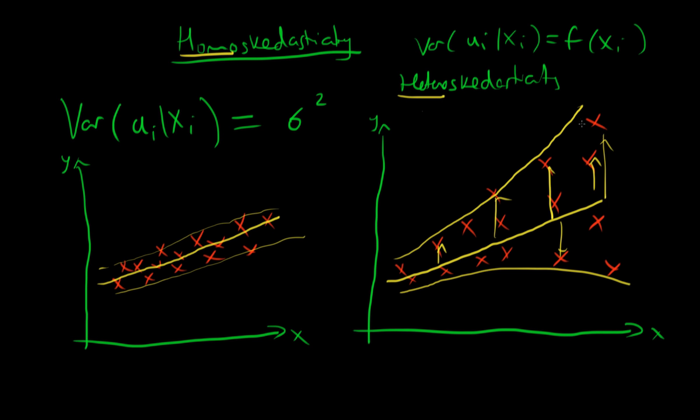So why do we care about our errors being homoscedastic? Well, as I said, it's one of the Gauss-Markov assumptions, and if it is violated it means that our least squared estimators are no longer BLUE. In particular, they are no longer best. So there are other linear unbiased estimators which have a lower sampling variance.